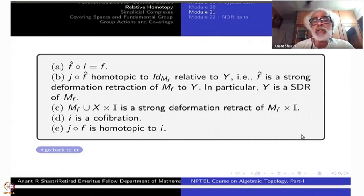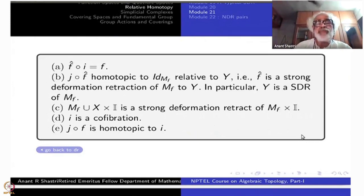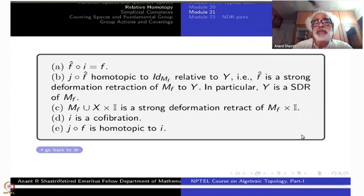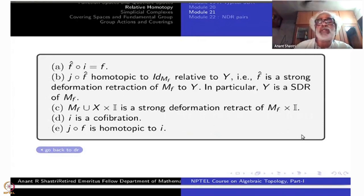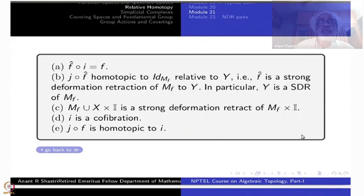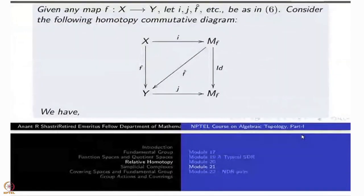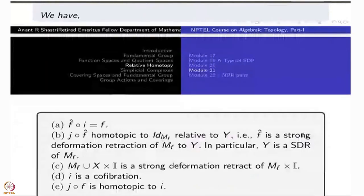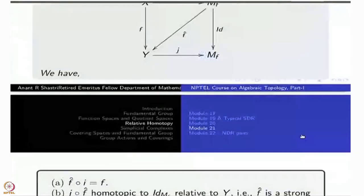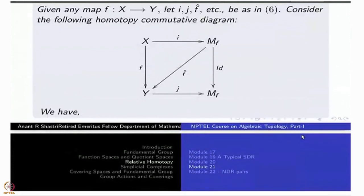In particular, Y is an SDR of MF. MF union X cross I is a strong deformation retraction of MF cross I. So the inclusion map I is a co-fibration. From C to D, you know how to go because we have seen this. J composite F is homotopic to the inclusion map itself — the top map.